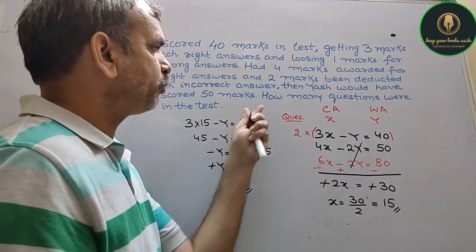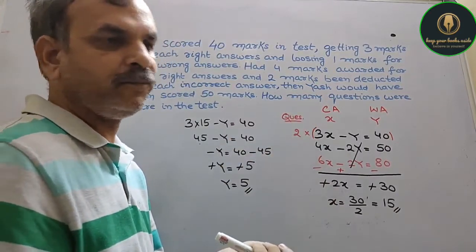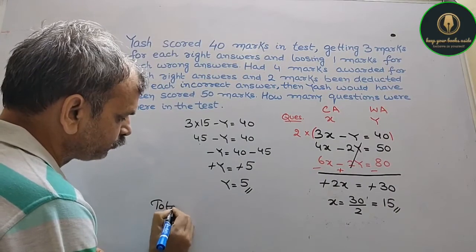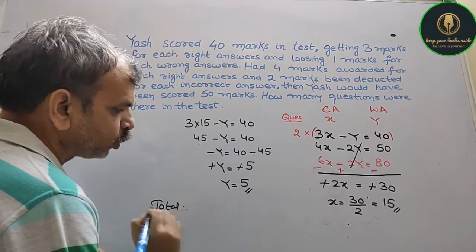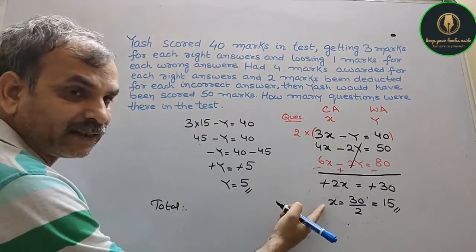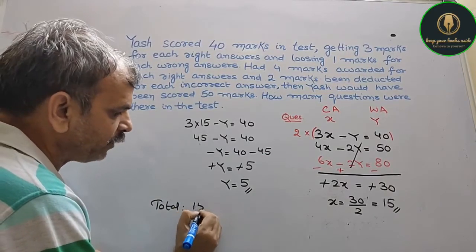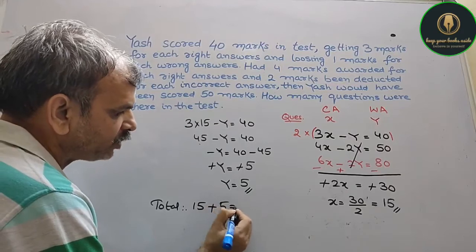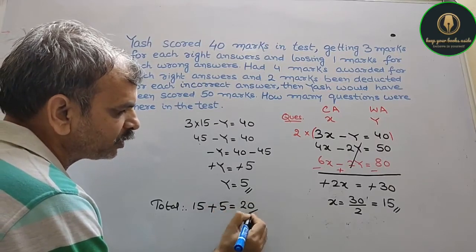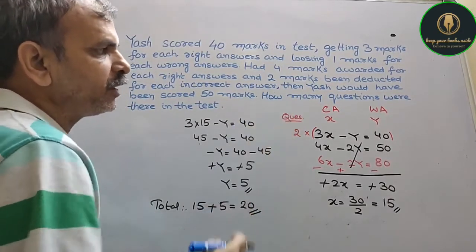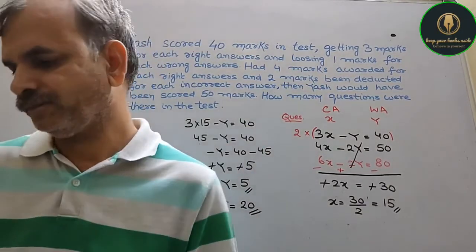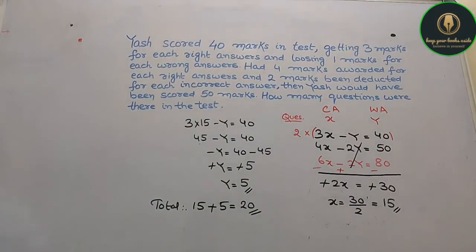So there were 5 wrong answers and 15 correct answers. He asked how many questions were there total? Total questions: X correct is 15, plus 5 wrong, equals 20 questions. There are 20 questions in examination.